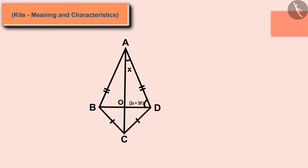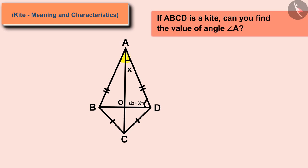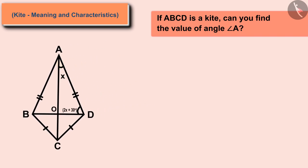If ABCD is a kite, can you find the value of angle A? As we know, the diagonals in a kite are perpendicular to each other.